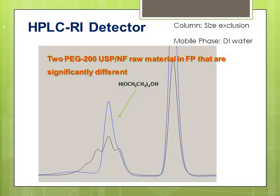This is an overlay of the two PEG 200 samples, showing that they are significantly different. Whether this will have any impact on your finished product — probably not, or possibly yes — but at least with this chromatography you can get information about the amount, and you can see the differences between PEG 200 raw materials in your product versus the raw material used in the product you are reverse engineering.